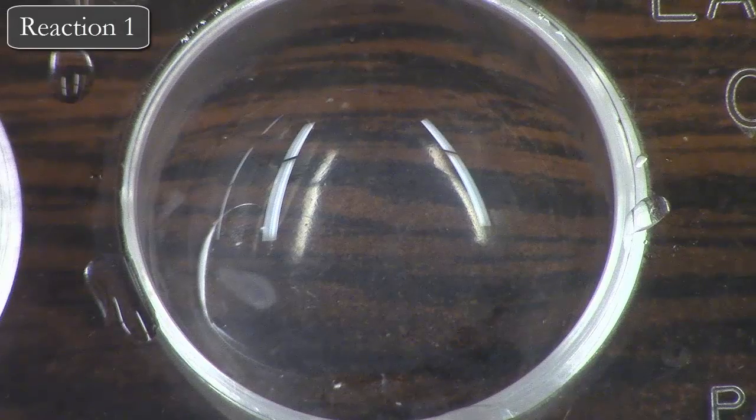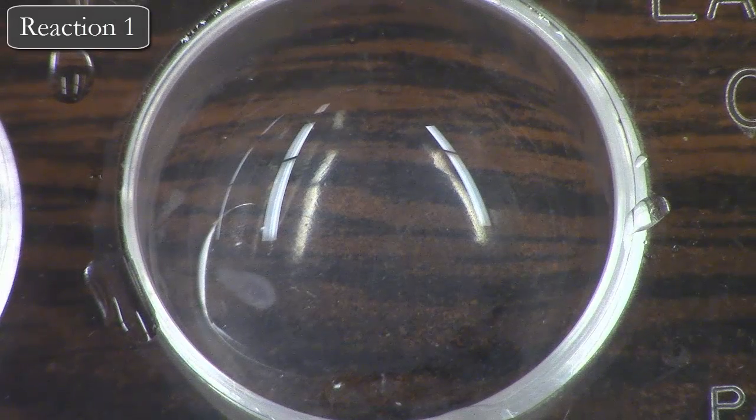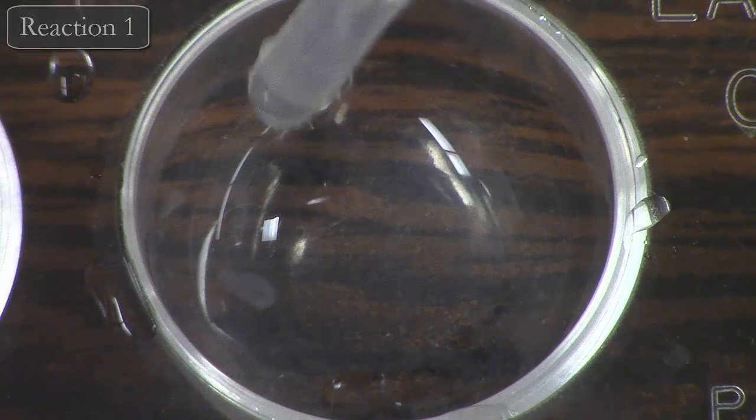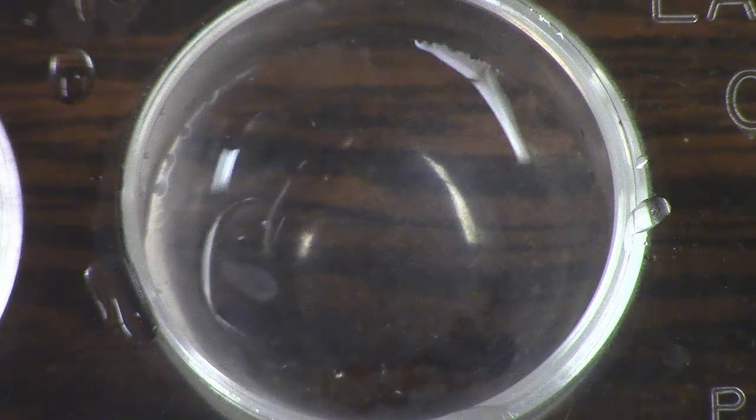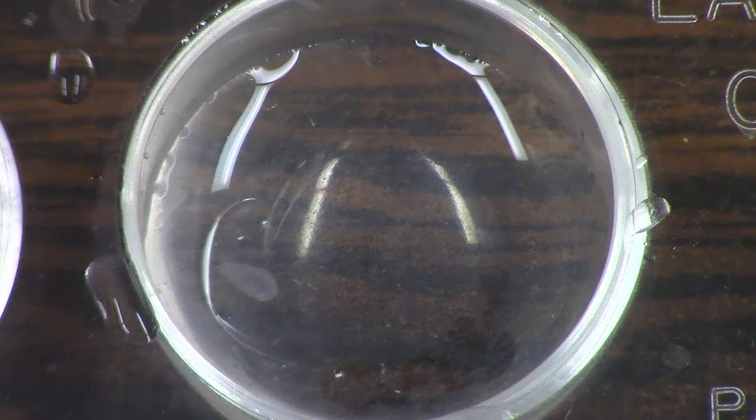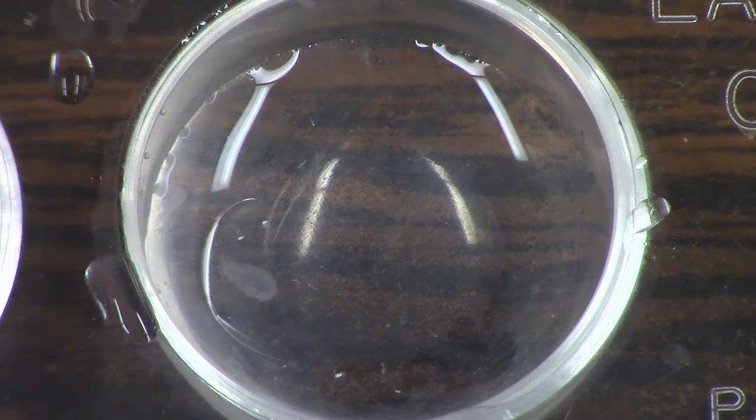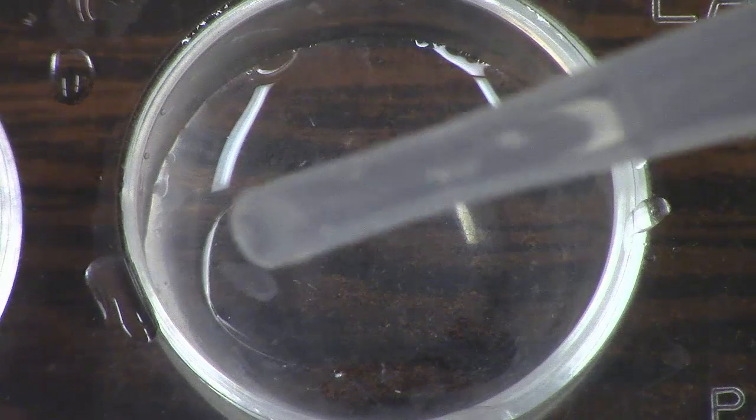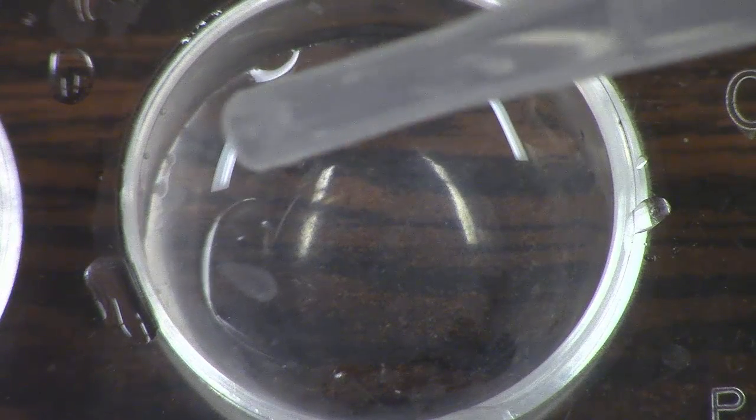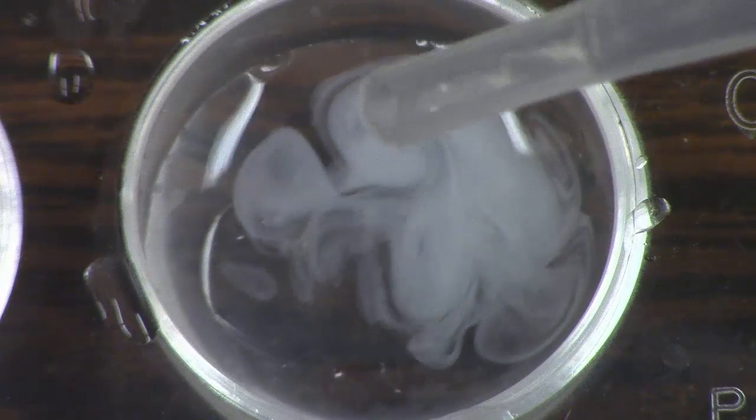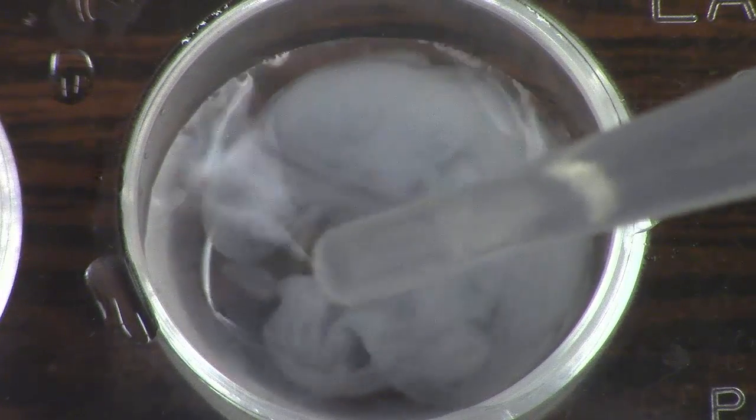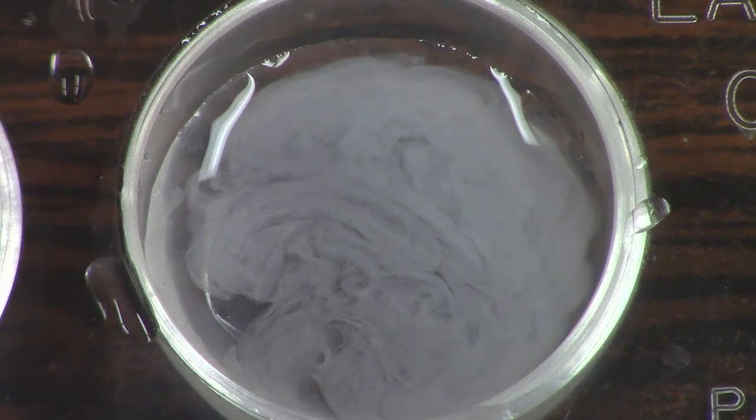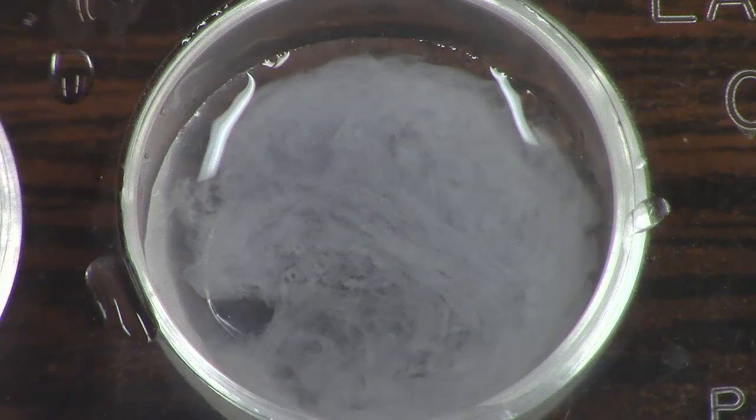For our first reaction, we're going to mix barium chloride with sodium sulfate. Barium chloride is a clear solution, and watch carefully—you can see in the pipette that sodium sulfate is also clear. I'll put a couple drops in there so you can see what happens. Write down some observations and try to predict what products just formed.